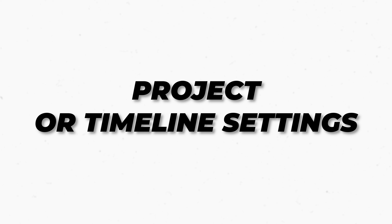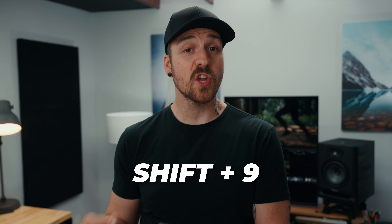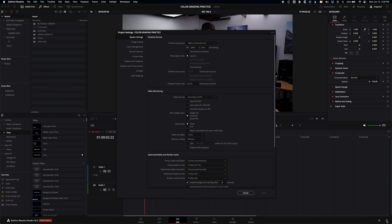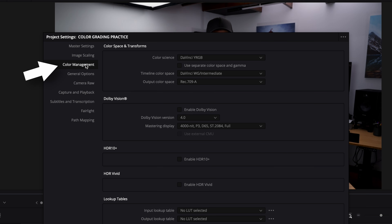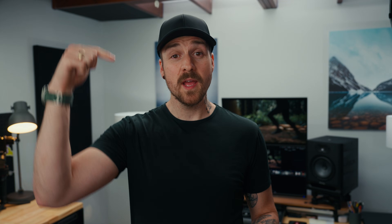The next settings you need to configure are your project or timeline color management settings. The reason I say project or timeline is because being able to do color management at the timeline level is a new feature as of Resolve version 18, so this might be new to you. For the project-level settings, you can hit Shift+9 or click the cog in the bottom right, then go to the Color Management tab. For the sake of keeping things simple, I'm not going to dive too deep into color management workflows — if you want a video on that alone, leave a comment below.